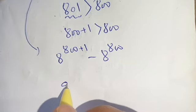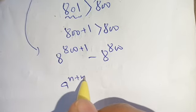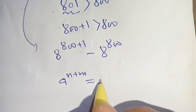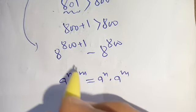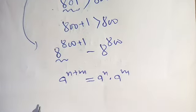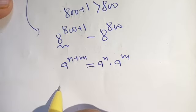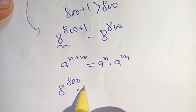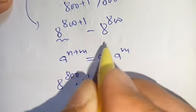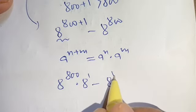We know that a power n plus m is equal to a power n times a power m. We use this identity on the first term and we get 8 power 800 times 8 power 1 minus 8 power 800.